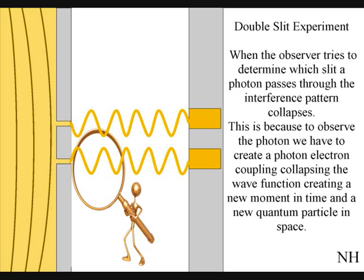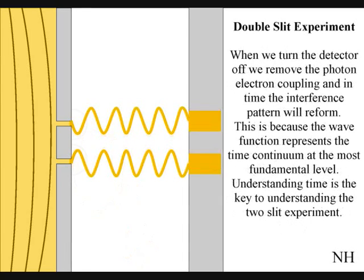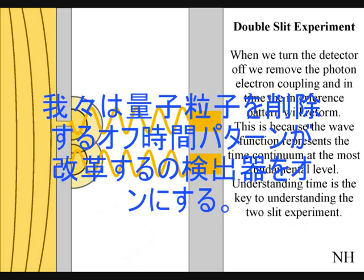If we turn the detector off, we remove the photon-electron coupling, and in time, the interference pattern will reform.